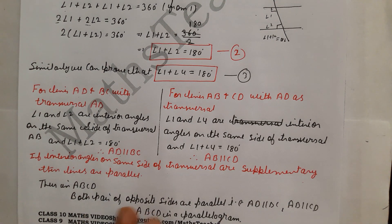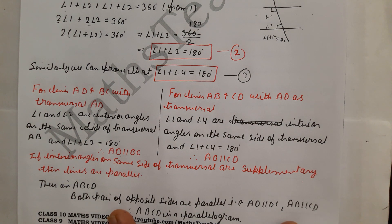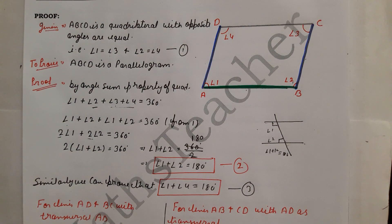If you have studied Chapters 6 and 7, keep those theorems in mind because when proving lines parallel you need to show 180 degrees or that alternate angles are equal to get the parallel proof. I hope you understood this. If you have any doubts please comment in the comment box. Thank you.